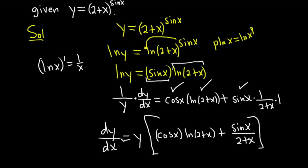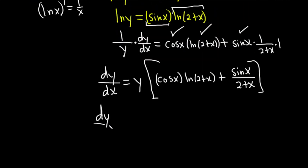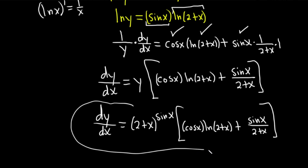The last step is to replace y with what it was given at the beginning. So dy/dx equals (2 plus x) to the sine x, times [cosine x times ln(2 plus x) plus sine x over (2 plus x)]. You could distribute and simplify further, but this form is quite nice.